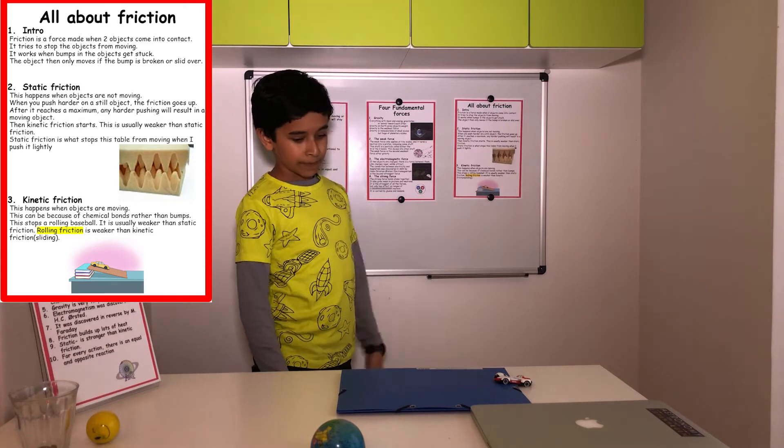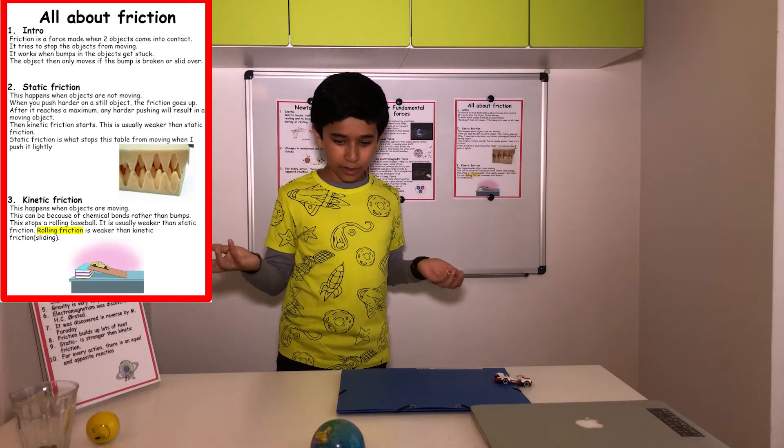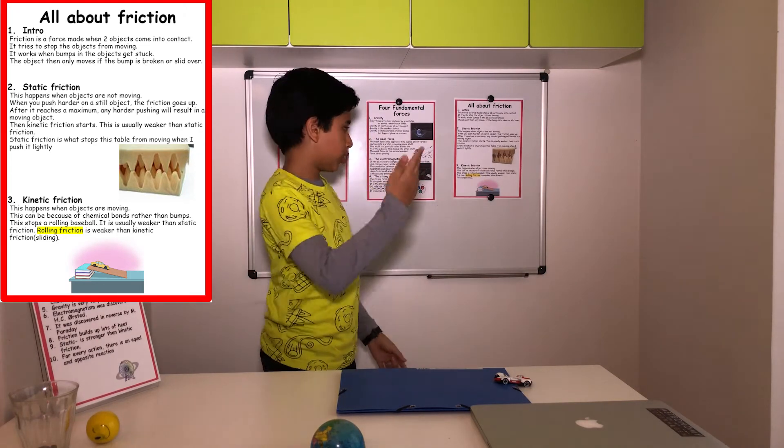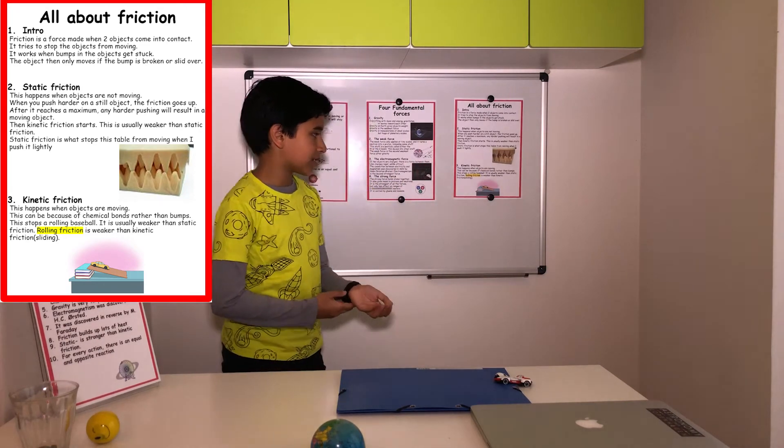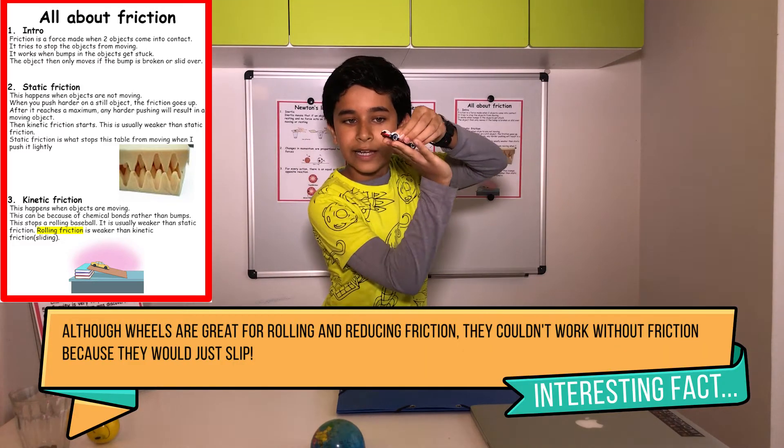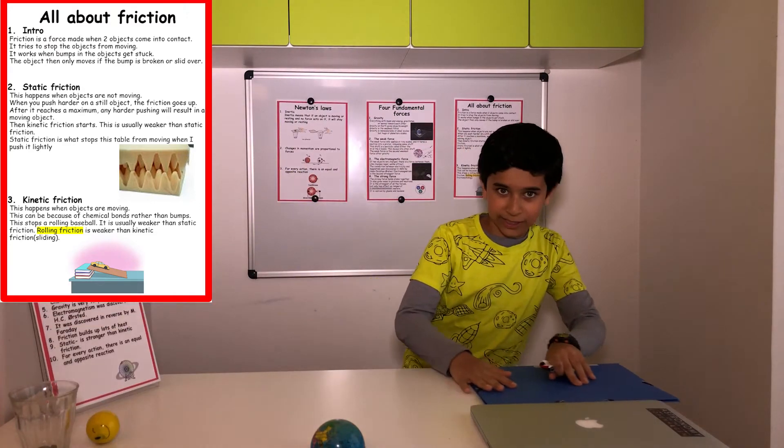Kinetic friction. This happens when objects are moving. This can be because of chemical bonds rather than bumps. This stops a rolling baseball. It's usually weaker than static friction. Rolling friction, like this car, is even weaker than sliding friction.